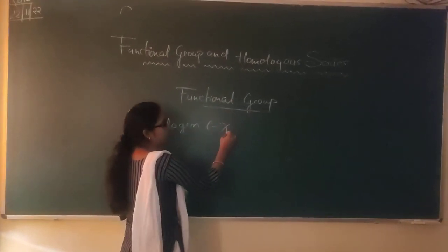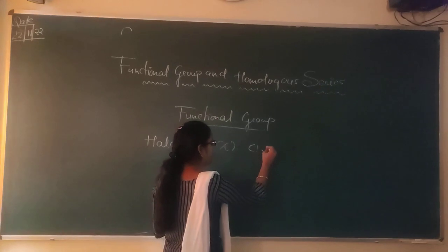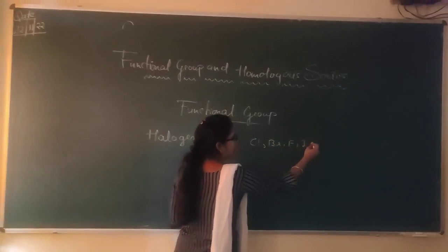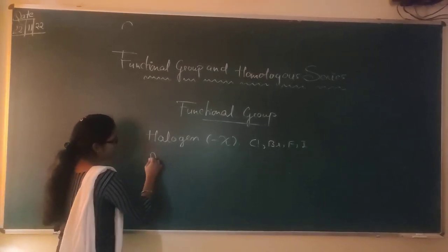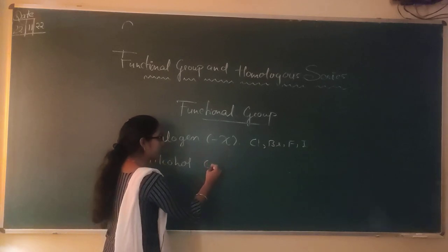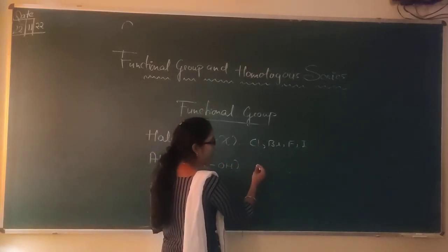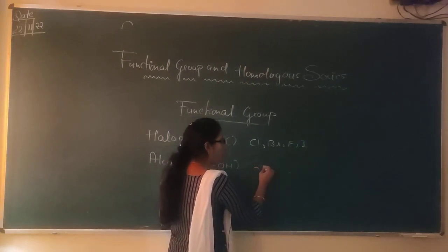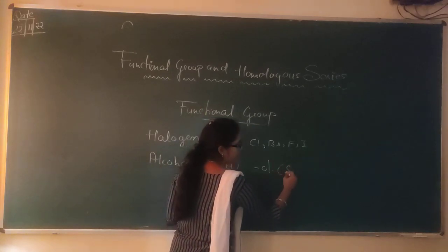First is halogens, and in halogens we will learn about chlorine, bromine, fluorine, and iodine. Second is alcohol. Alcohol is represented by OH, and agar koi bhi compound aapka alcohol hoga, toh aap suffix use karo ge 'ol'.